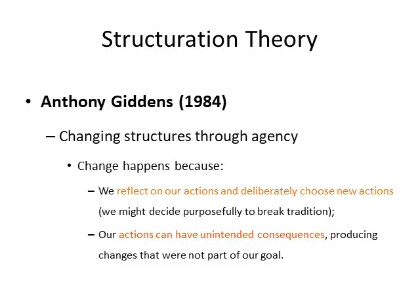Changing structures through agency: change happens because we reflect on our actions and deliberately choose new actions. We may purposely decide to break tradition — we've always done it this way, but we think we don't want to anymore, so we deliberately do something else, and that changes the structure of society. Additionally, our actions can have unintended consequences, producing changes that were not part of our goal. Sometimes we do things without even realising they're going to change the structures around us — we're simply doing what we think is best at the time.